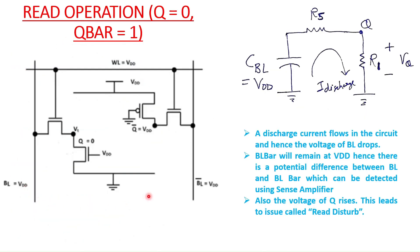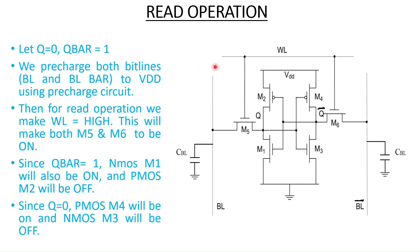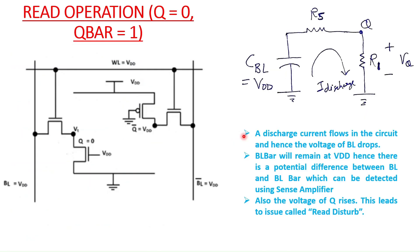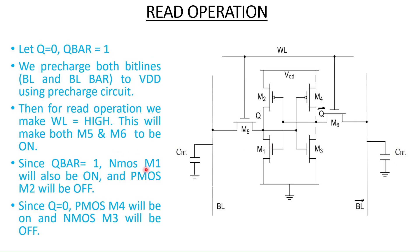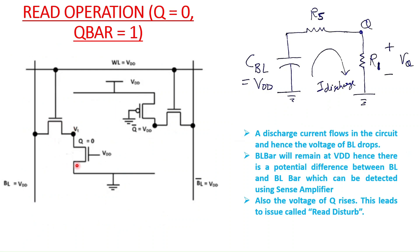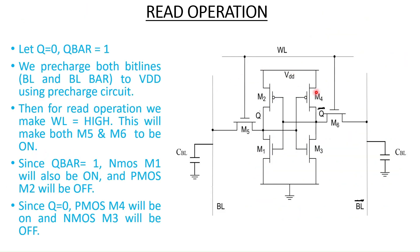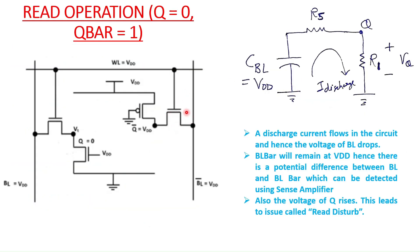This is the equivalent circuit of the read operation. M5 is on and M1 is on, so both these transistors are conducting. Similarly, M6 and M4 are on. We have removed the PMOS and NMOS transistors that are off. We will now focus on the active part of the circuit.